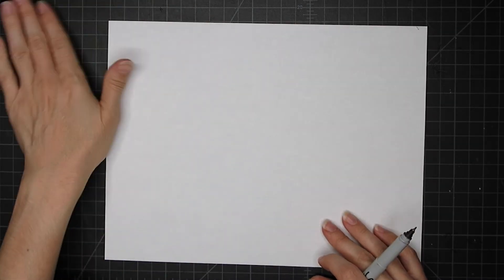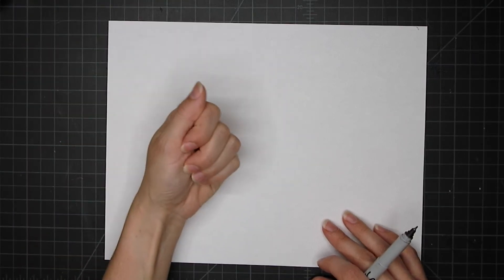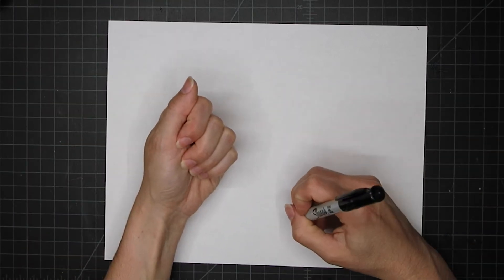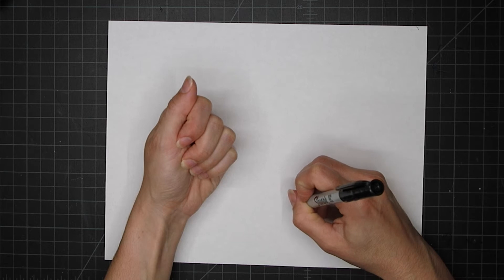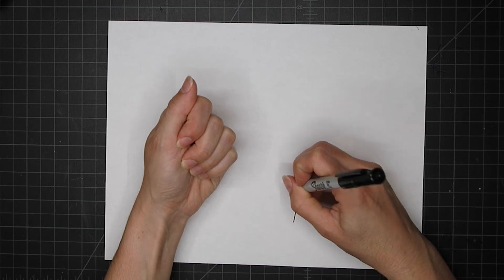I have a piece of paper and for this drawing I'm going to use a sharpie marker. First I'm going to place my hand in a comfortable position.